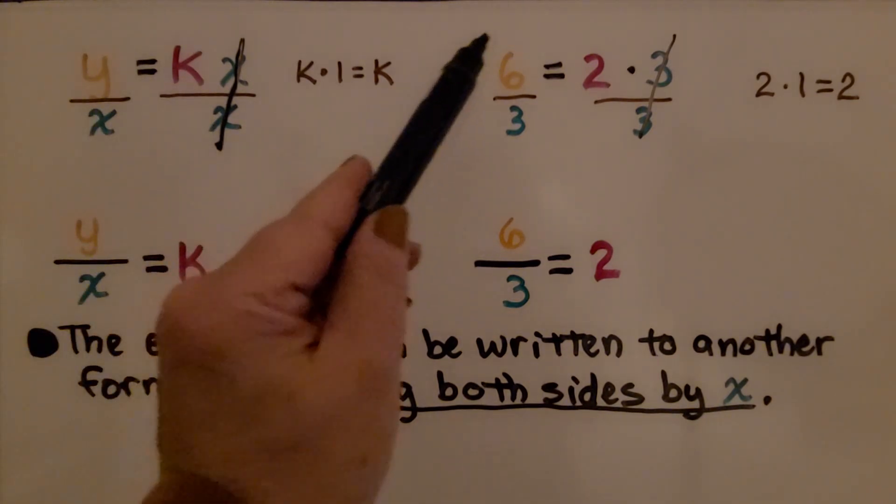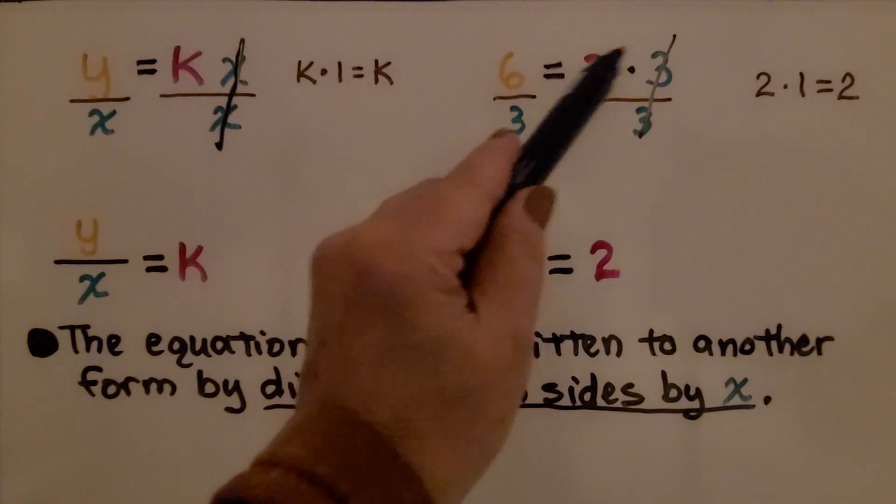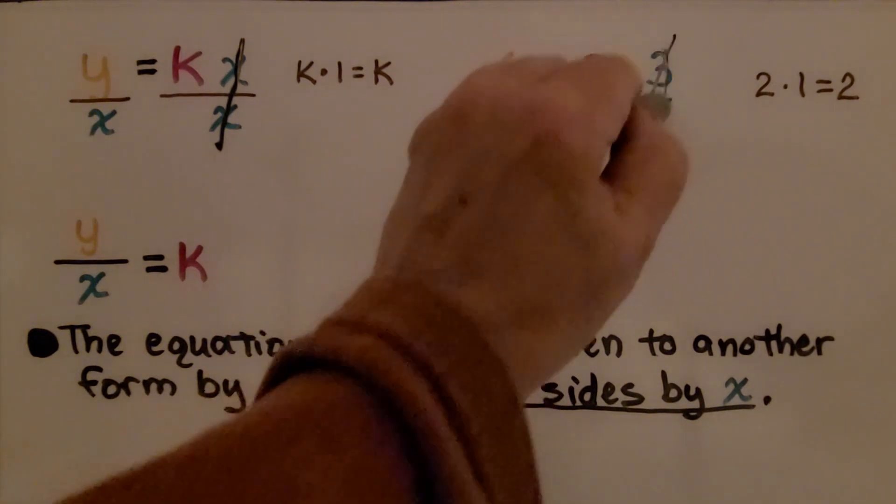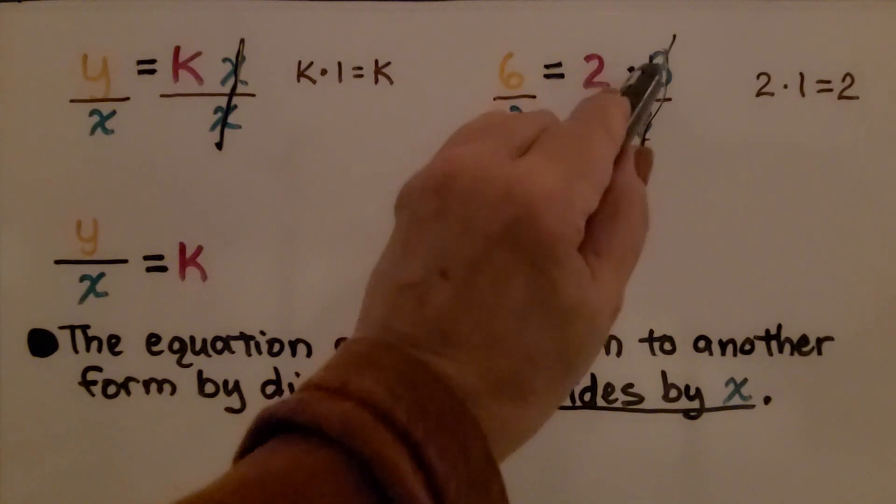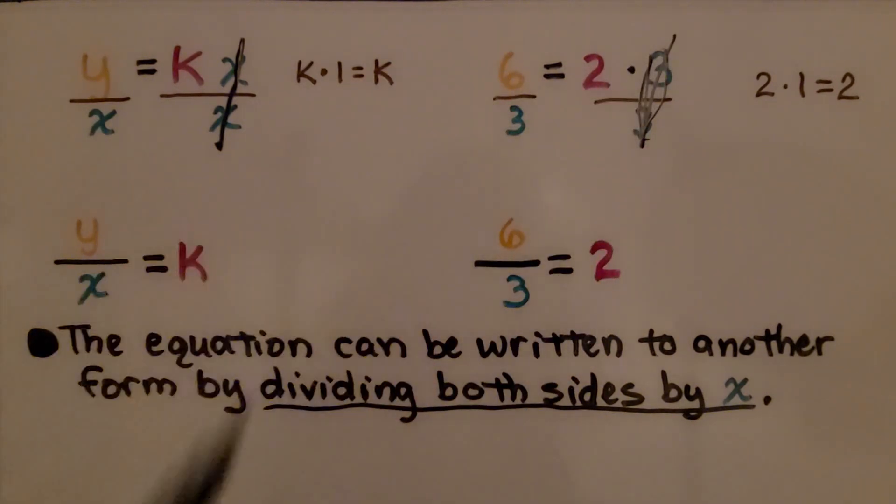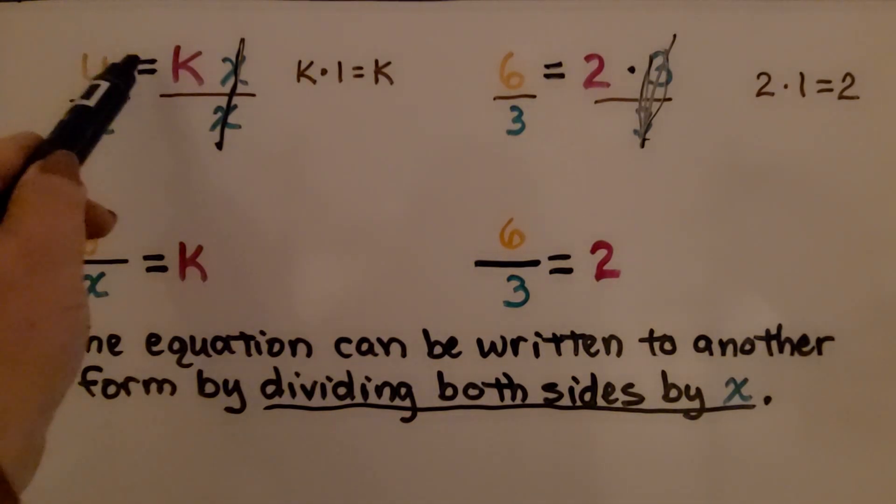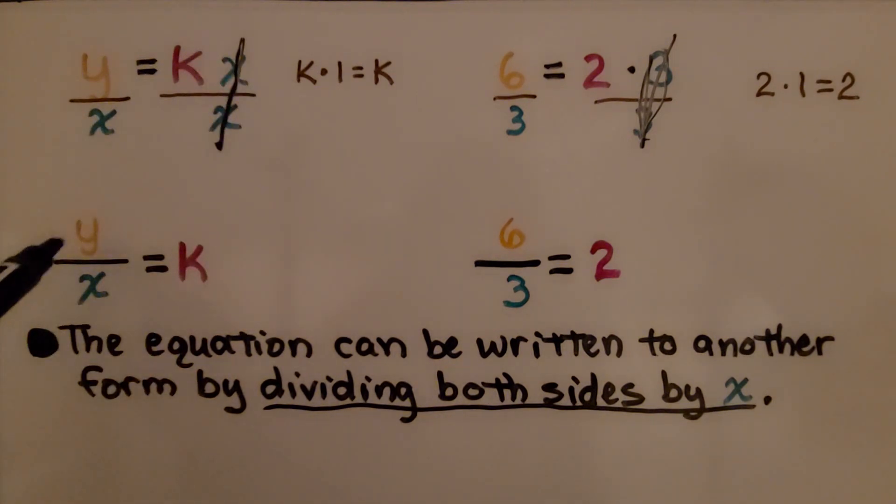It would be the same as if we had 6 equals 2 times 3, and we divided both sides by 3, and this became a 1. So we had 2 times 1 on this side, and 6 divided by 3 on this side. The equation can be written to another form by dividing both sides by x. That's how y equals kx can become y divided by x equals k.